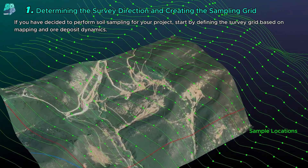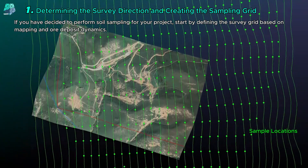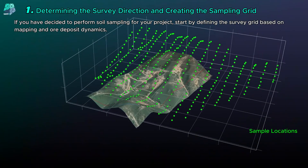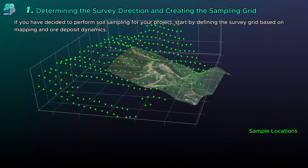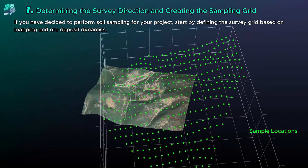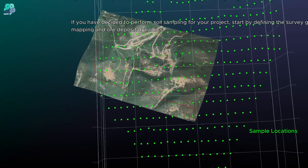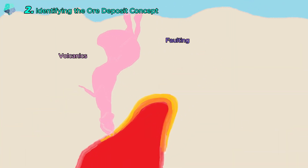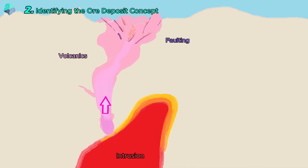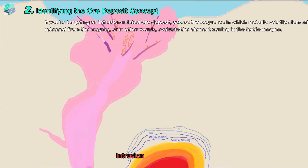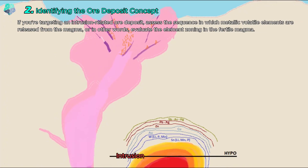You can start your mineral exploration project by determining the survey direction and creating a sampling grid. If you have decided that soil sampling will work for your project, determine the survey grid according to mapping and ore-forming dynamics. To establish the ore-forming concept, you will need to compare the existing data with the results of literature reviews. At this point, it is crucial that the relevant deposit experience and field studies are conducted correctly.